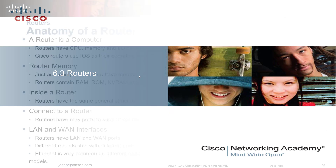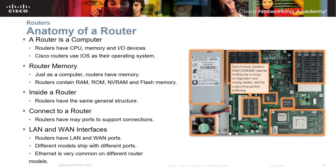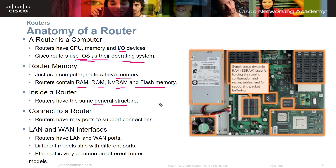Let's take a look at routers — the physical routers, anatomy of a router. This is a Cisco router with the case pulled off. They have a CPU, memory, and input/output devices. They use IOS as their operating system. You have fans, power supplies, and RAM built in. Routers have RAM, ROM, NVRAM, and flash memory, and they have the same general structure when we're talking about Cisco routers.